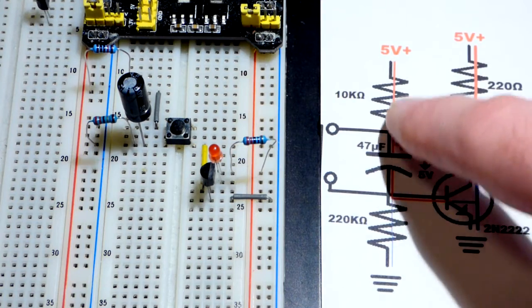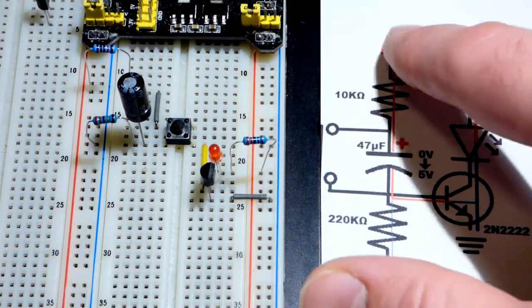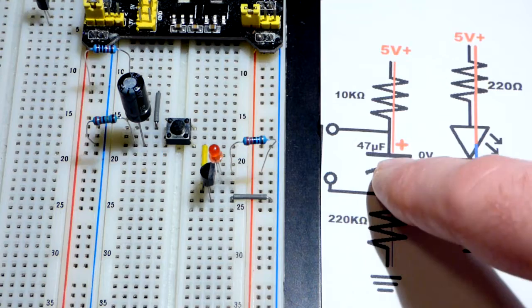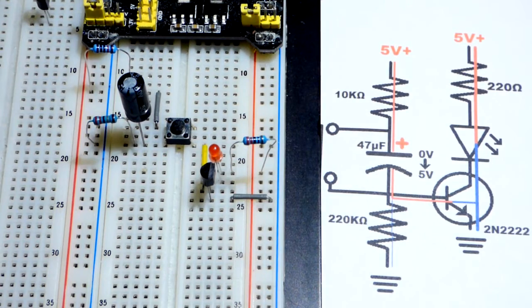And basic Ohm's law tells you that the current going through the resistor is based on its resistance and the voltage across it. So as the voltage is going down across it, you're getting less current. And the capacitor is charging slower.